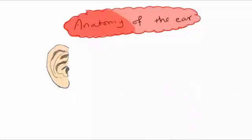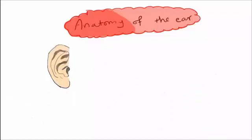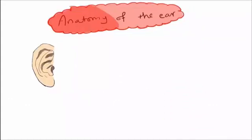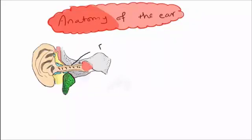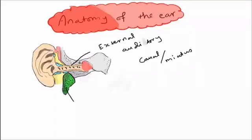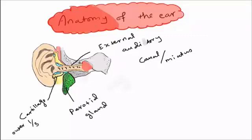And now we will go more medially into the external auditory canal. The external auditory canal is situated in a position higher than the parotid gland. Its outer third is surrounded by cartilage and its inner third is surrounded by the temporal bone.